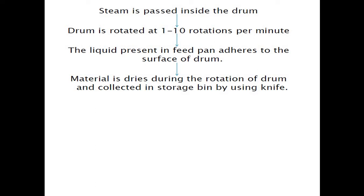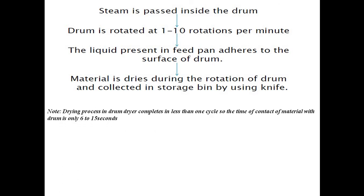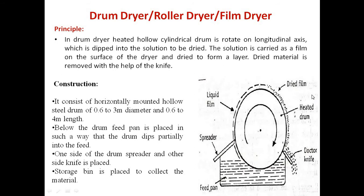Steam is passed inside the drum, carrying latent heat to heat the drum. The drum rotates at 1 to 10 rotations per minute. The liquid in the feed adheres to the drum surface, the material dries during rotation, and is collected in the bin using a doctor blade (knife). The drying process completes in less than one cycle — the time of contact of material with the drum is only 6 to 15 seconds.